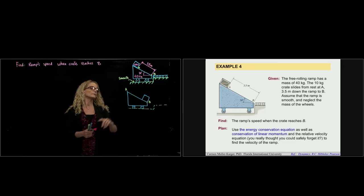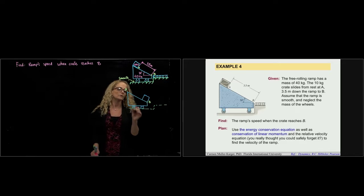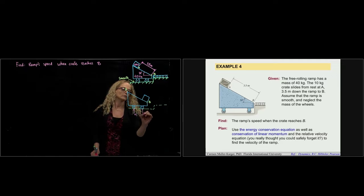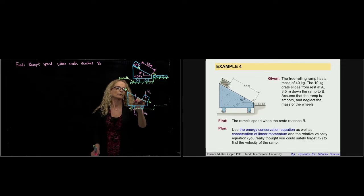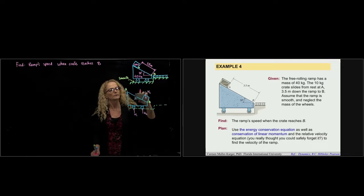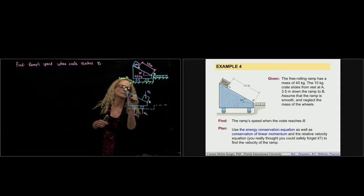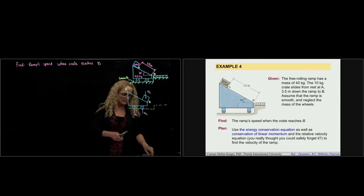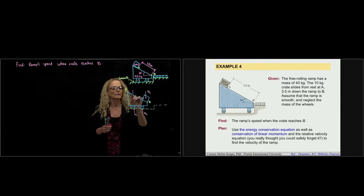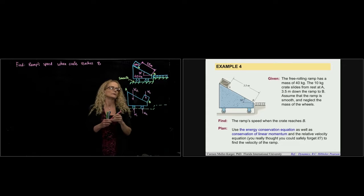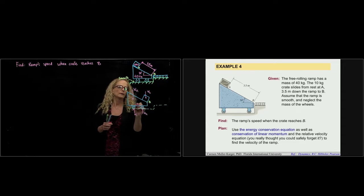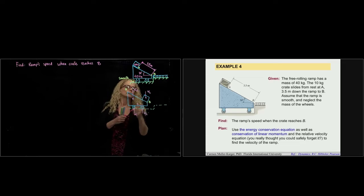If we want to draw the free body diagram to see what forces we have: we have two normal forces, N1 and N2. We have the weight of the crate and the weight of the ramp — it will be a little bit more to the heavy side. We don't have to calculate where it is because we're not taking moments. Let's call this the ramp and let's call this the crate.